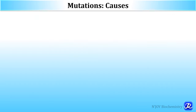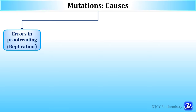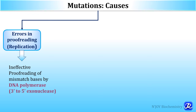What are the various causes of mutations? The first cause is error in proofreading during DNA replication. DNA polymerase corrects mismatches during replication by proofreading, and this excision of the mismatch base occurs by 3' to 5' exonuclease activity of DNA polymerase, by which the correct base is added. But if the proofreading is not effective, the lesion remains in the DNA molecule and it leads to mutation.